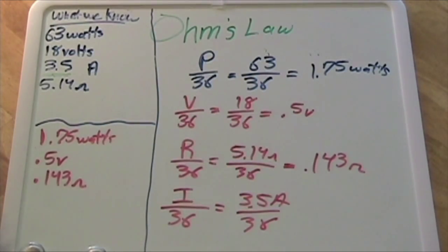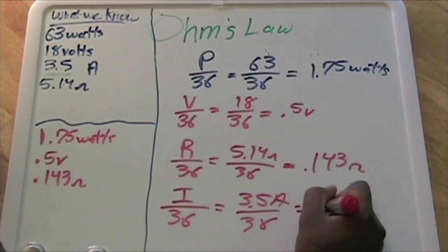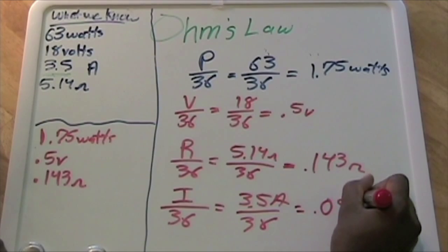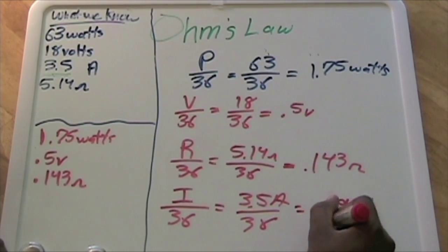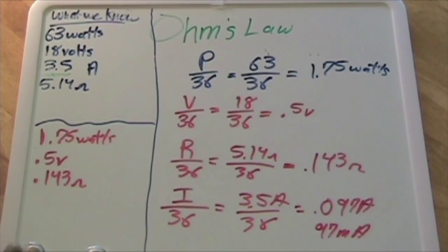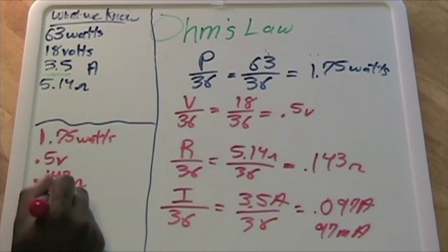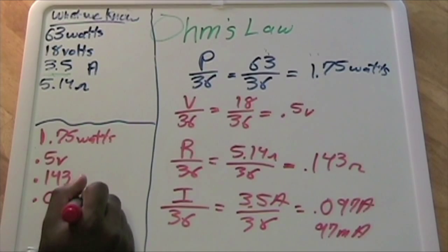Or we can write it as 97 milliamps, but just to keep it simple, I'll write it as 0.097 amps.